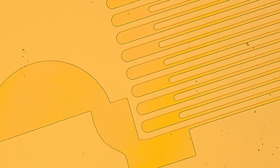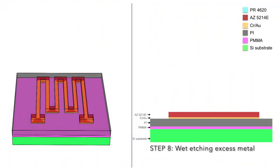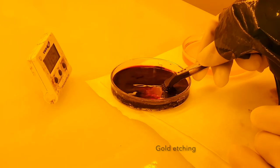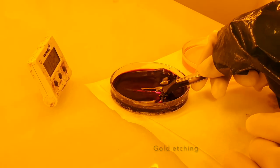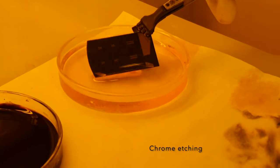We then hard bake the photoresist to solidify the pattern. We then start the wet etching process to remove the unwanted gold and chromium in the exposed area and define our sensor pattern. The photoresist layer will protect the metal layer during the wet etch process.